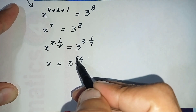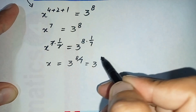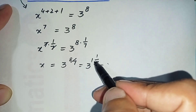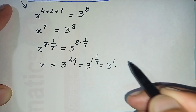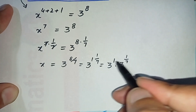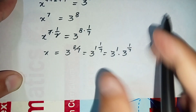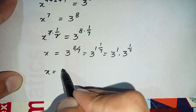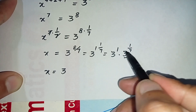Now, 8 over 7 is an improper fraction. We convert it to a mixed fraction: 8 divided by 7 equals 1 whole and 1 over 7. We can write 3 raised to power 1 whole 1 over 7 as 3 raised to power 1 times 3 raised to power 1 over 7. So x equals 3 times the 7th root of 3.